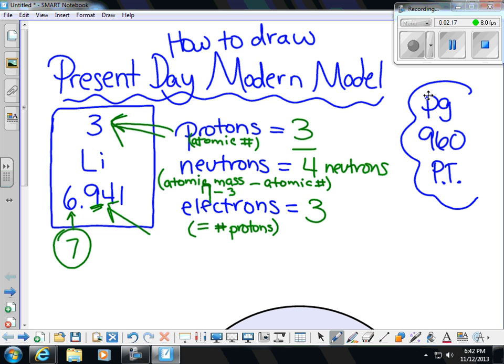So we have 3 protons, 3 electrons, 4 neutrons. Now we are going to draw the modern day model.